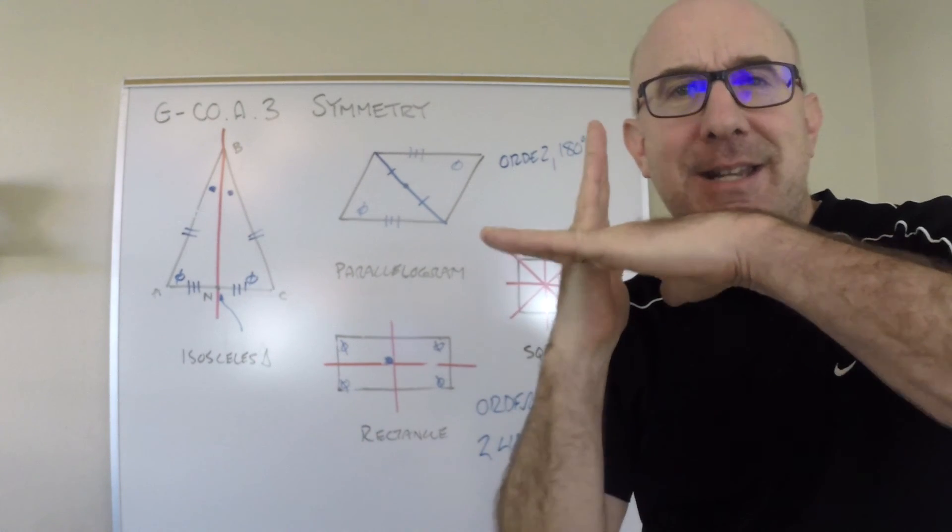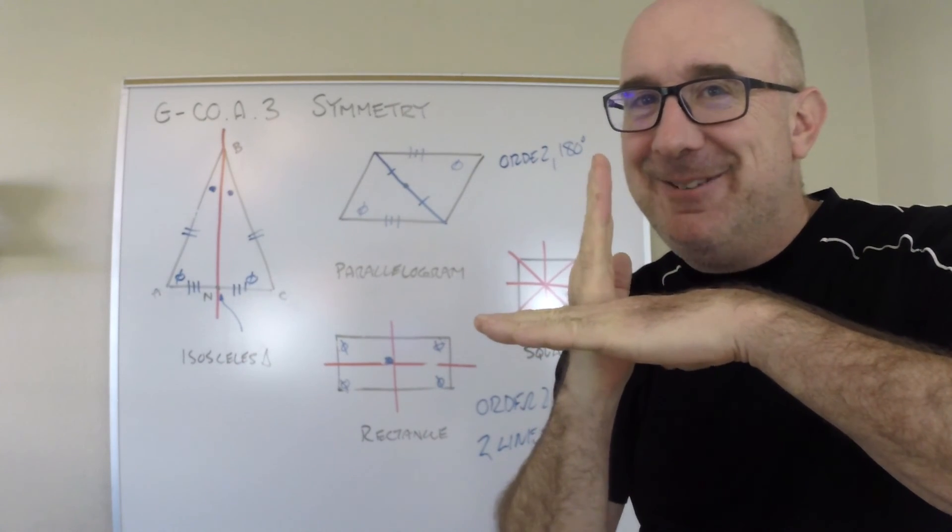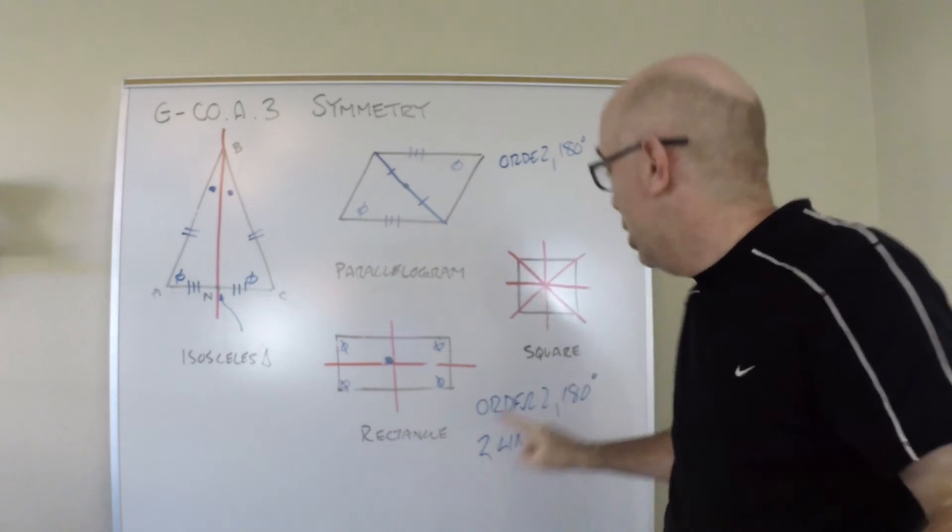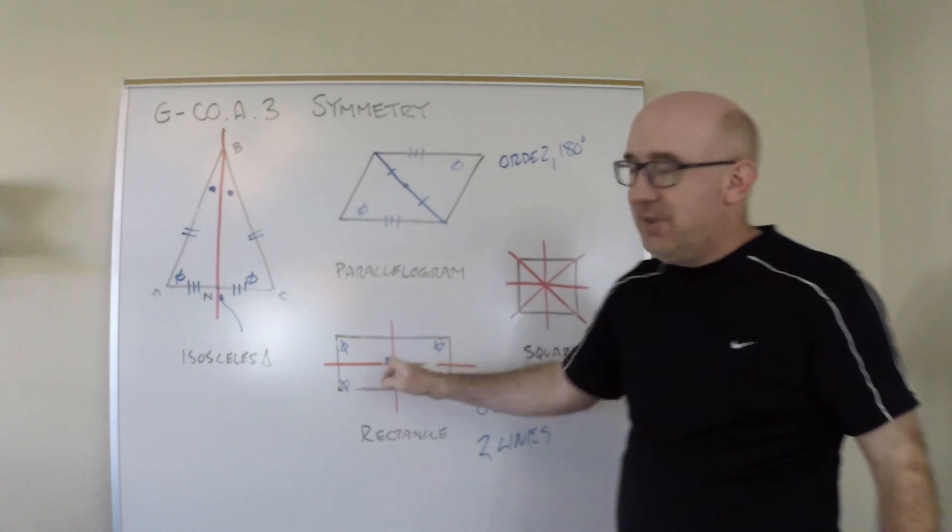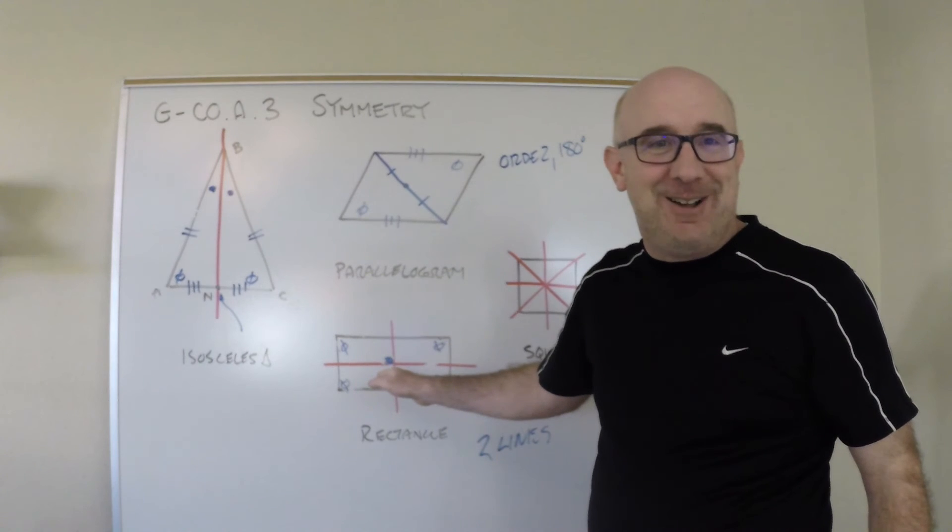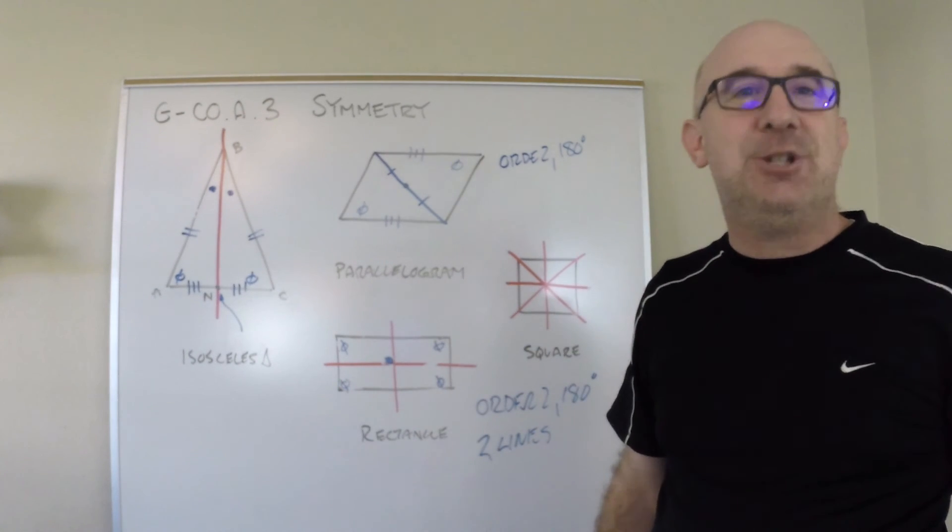And the lines intersect at 90 degrees. So a double reflection over a 90 degree intersection is a rotation of 180 degrees. The fact that there are two perpendicular lines there, it forces the rotation of 180 to exist.